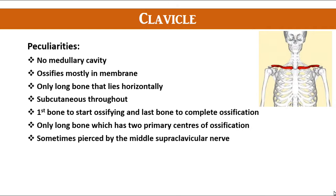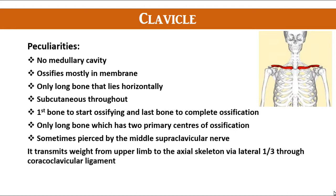Sometimes it is pierced by the middle supraclavicular nerve. It transmits the weight from the upper limb to the axial skeleton by the lateral one-third through the coracoclavicular ligament. So, it is also known as a modified long bone.